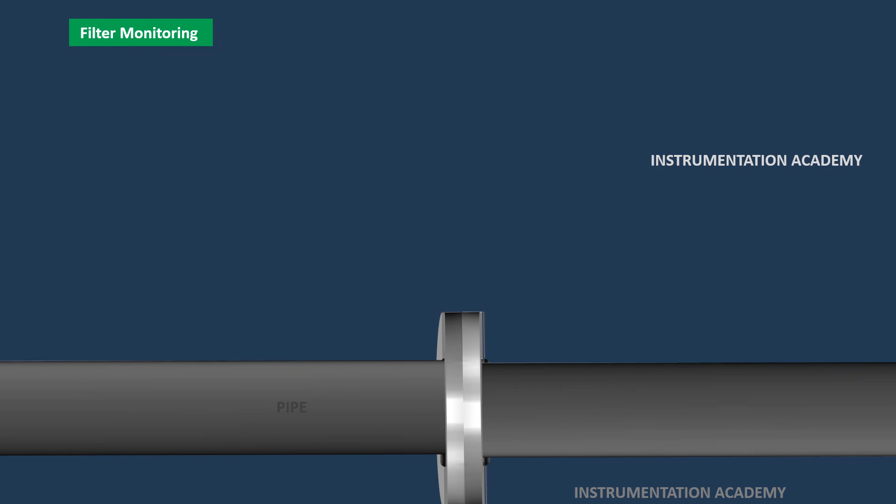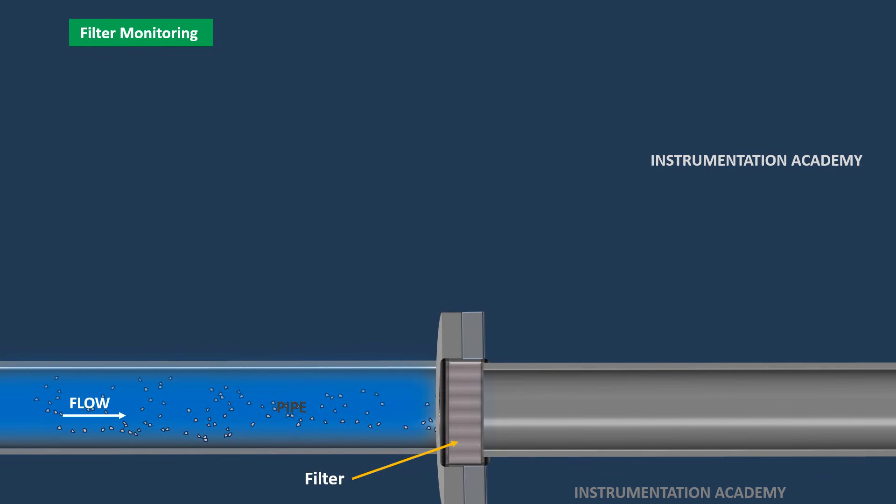In many industrial systems, filters are used to remove contaminants such as dirt, debris, and particles from liquids or gases. These filters work by obstructing the flow of fluid, capturing solid materials that would otherwise contaminate the process.